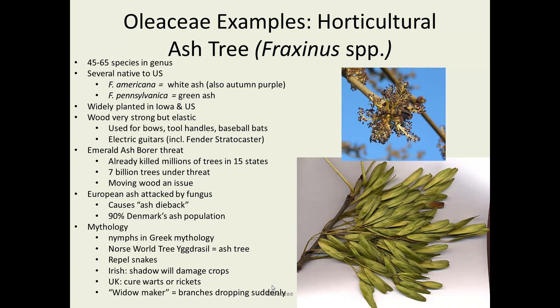Ash trees are native to the U.S. and have been widely planted with various cultivars identified. Unfortunately, they're now under threat from the emerald ash borer, which has already killed millions of trees in many states. It has spread in various ways, including through firewood cut from dead trees, with an estimated 7 billion trees under threat — far larger than the Dutch elm disease, which killed an estimated 20 million trees. Ash wood is very strong and has been used for bows, tool handles, especially baseball bats, and oddly enough, Fender Stratocasters, apparently because of its good resonant tone.